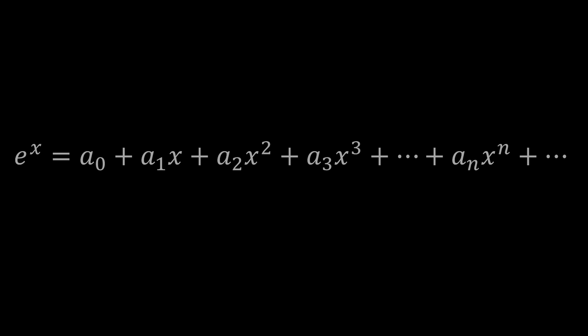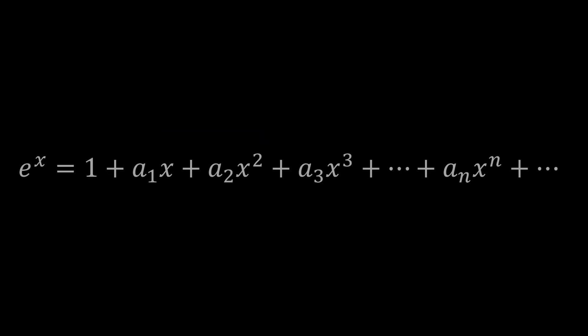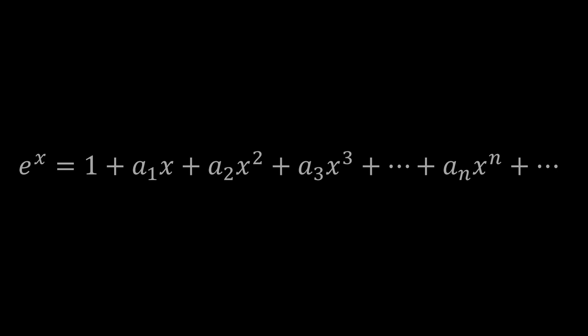Set x equal to 0 and look what happens: all of those x terms get annihilated, and we end up with E to the 0 equals a0. We know E to the 0 is 1 even if we don't know E. So a0 equals 1. Going back to the Maclaurin series, we can now write E to the x as 1 plus a1·x plus a2·x² plus a3·x³ plus so on.